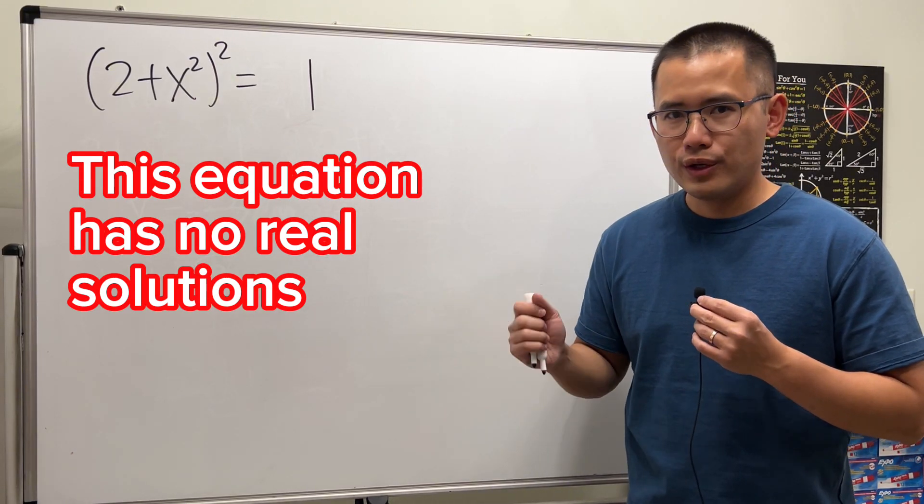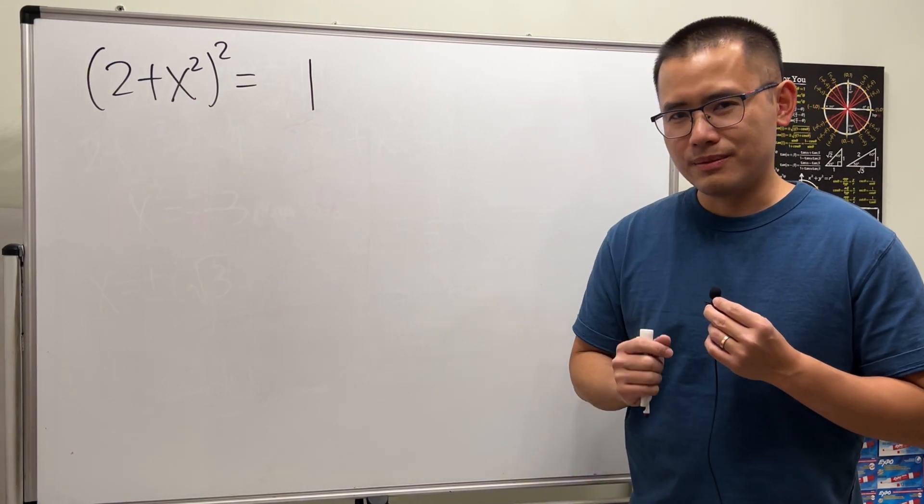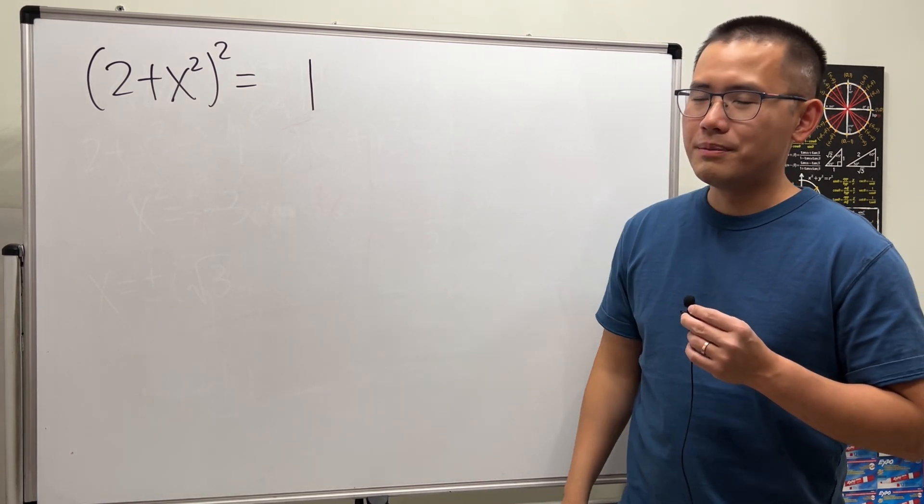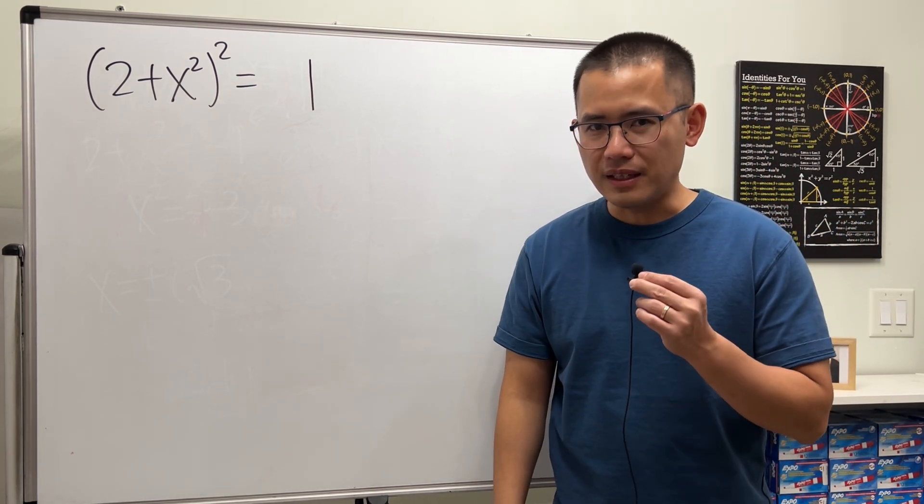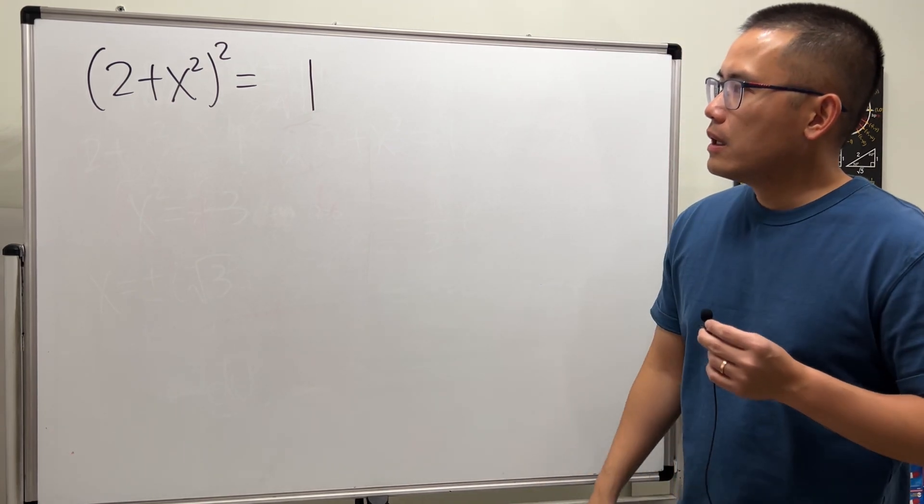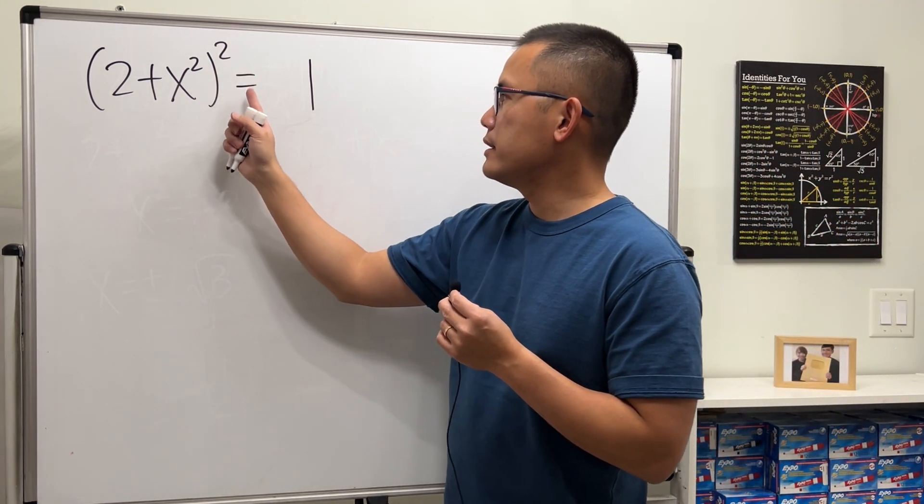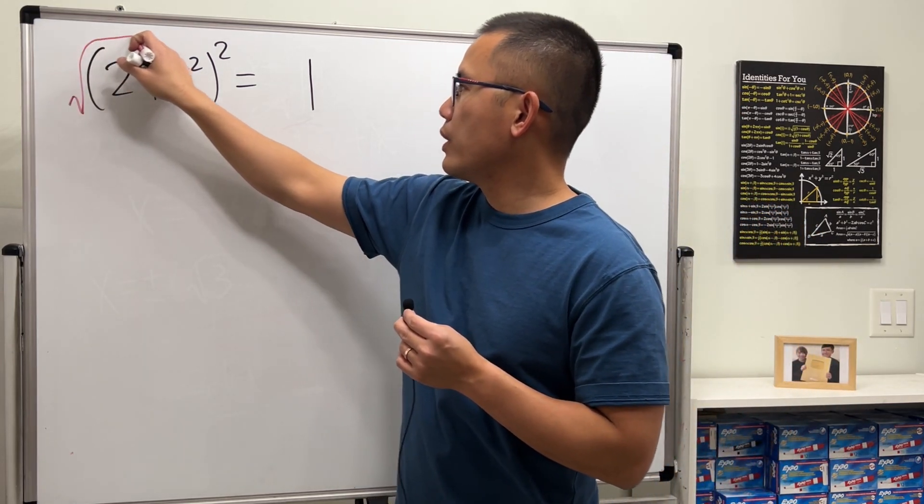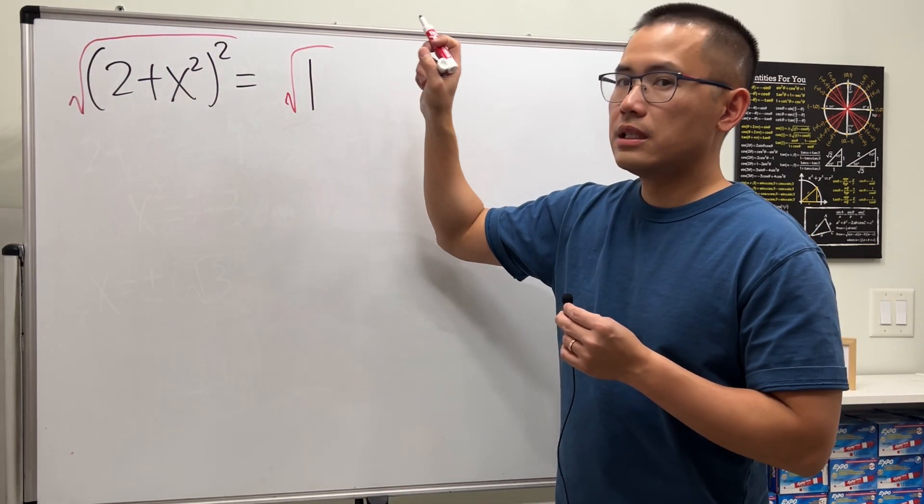This equation has no real solutions, and if you would like, please pause the video and try this first before you see my solution. Okay, here we go. Firstly, notice we have a quantity squared equals a number, so we can proceed by taking the square root on both sides.